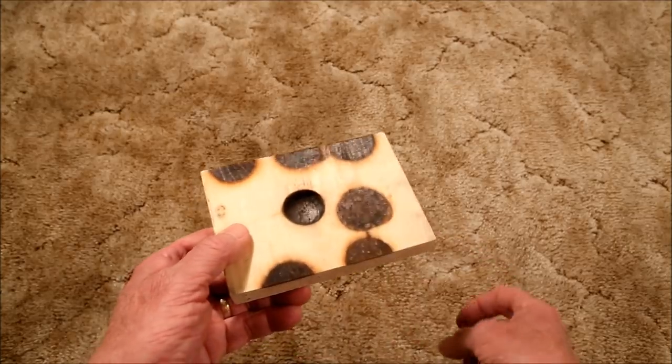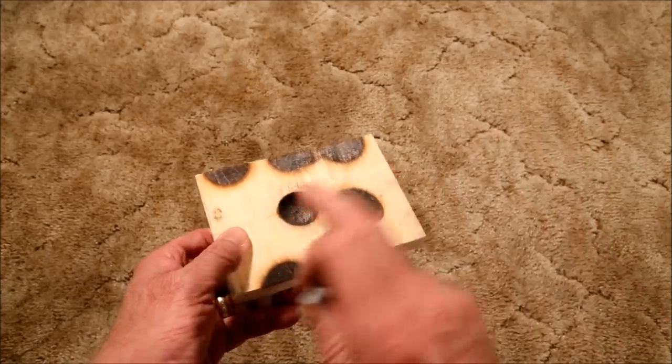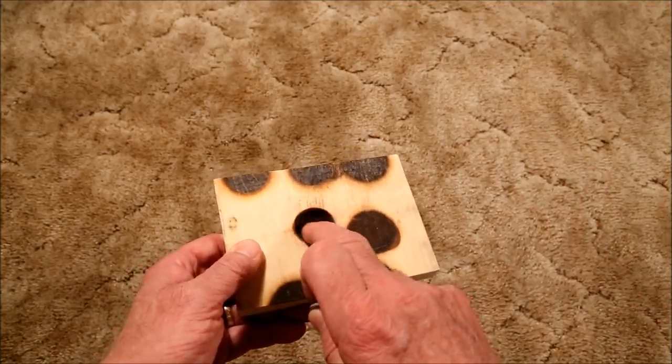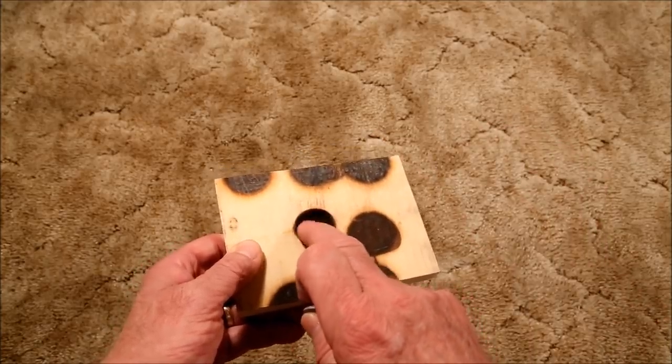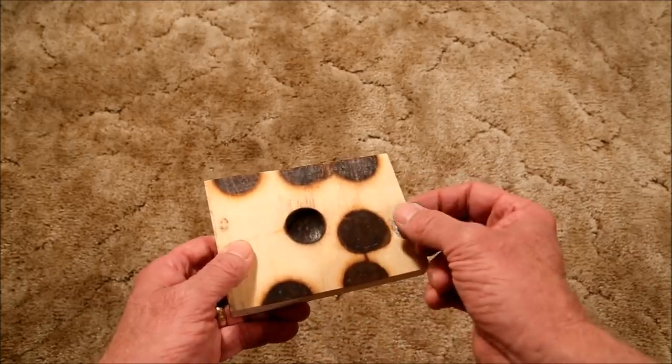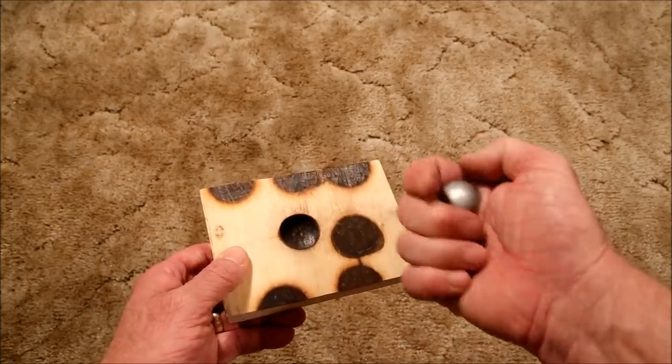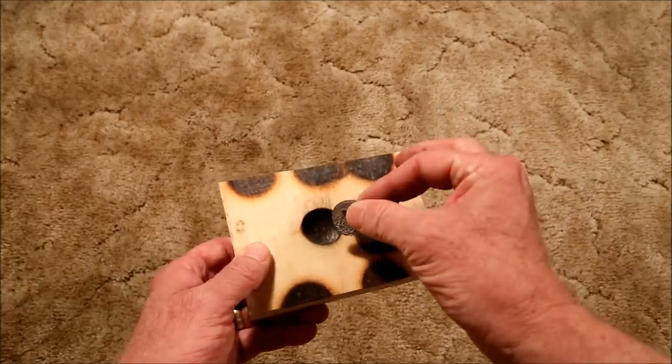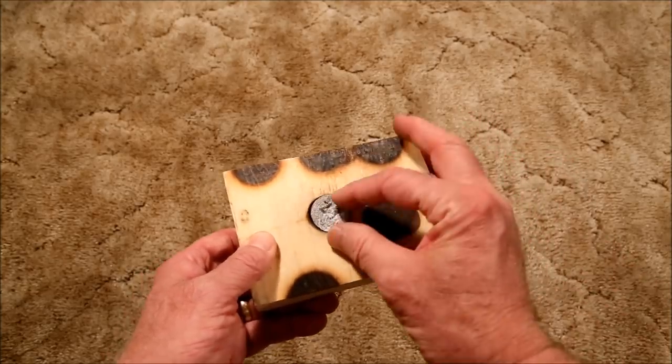One way to get around that is that you pour your lead into the mold. You'll have to do it a couple times, by the way, to drive out all the moisture. The first couple times you do it, the moisture in the wood is going to be driven out and you're going to get bubbles on the surface of your lead. Pour your lead in, which I will simulate with this,